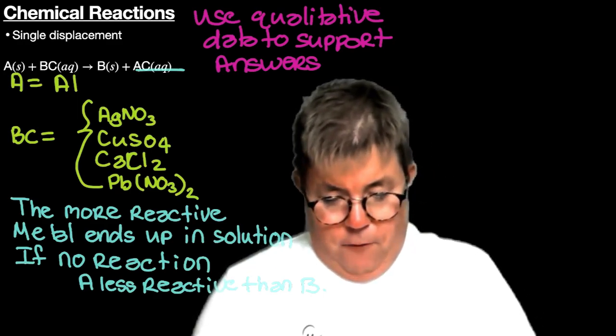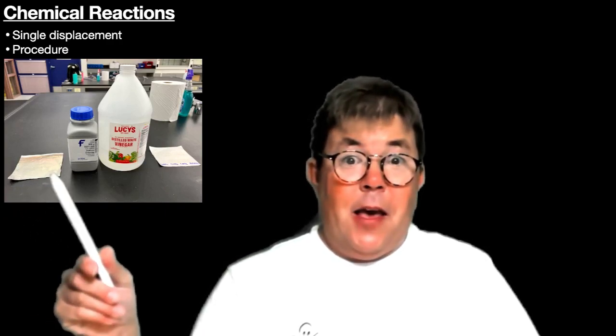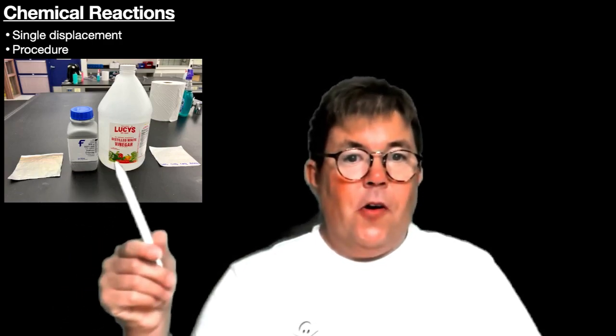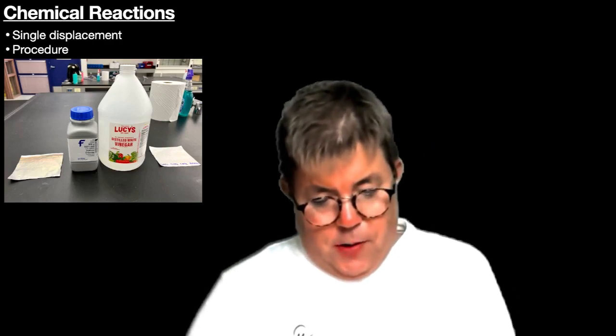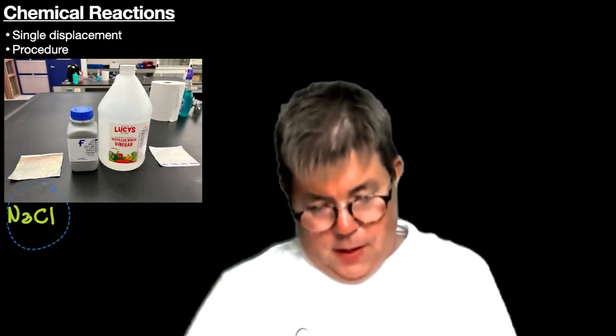Let me finish by showing you briefly how to carry out the experiments. So we are going to look at the procedure. I have a picture showing some aluminum foil. The aluminum foil looks a little oxidized — a little dirty. So I am going to take some salt and vinegar and clean the aluminum foil. We are going to take NaCl, which is going to be a solid.